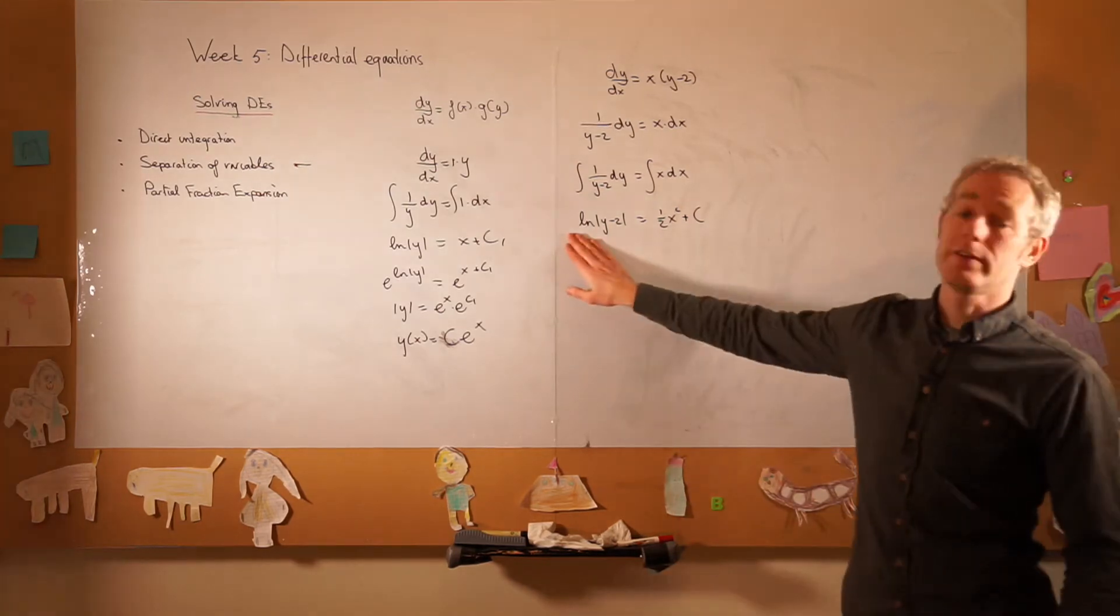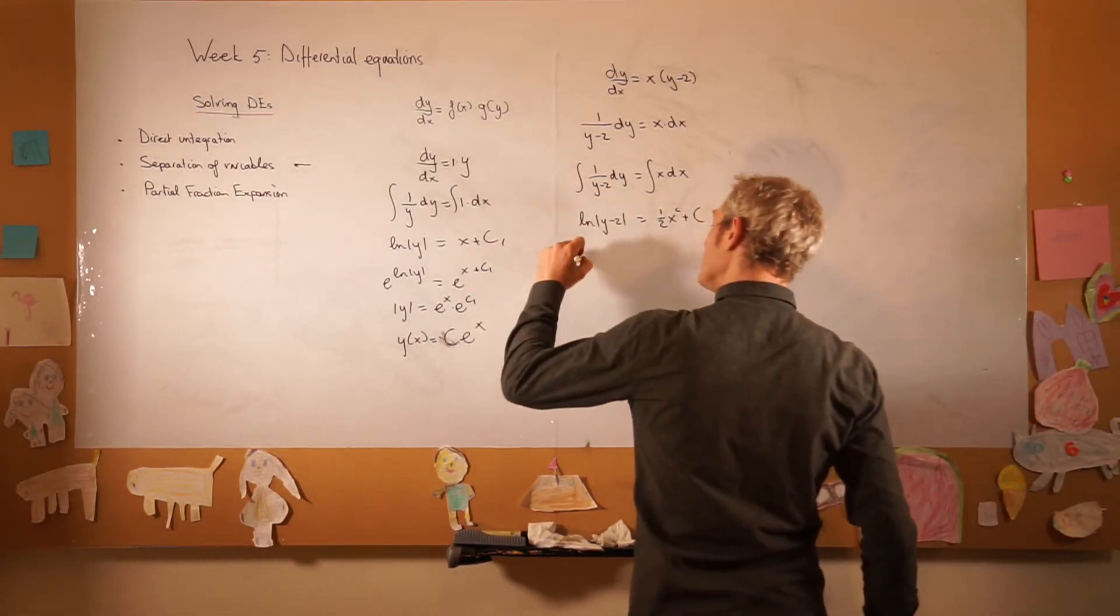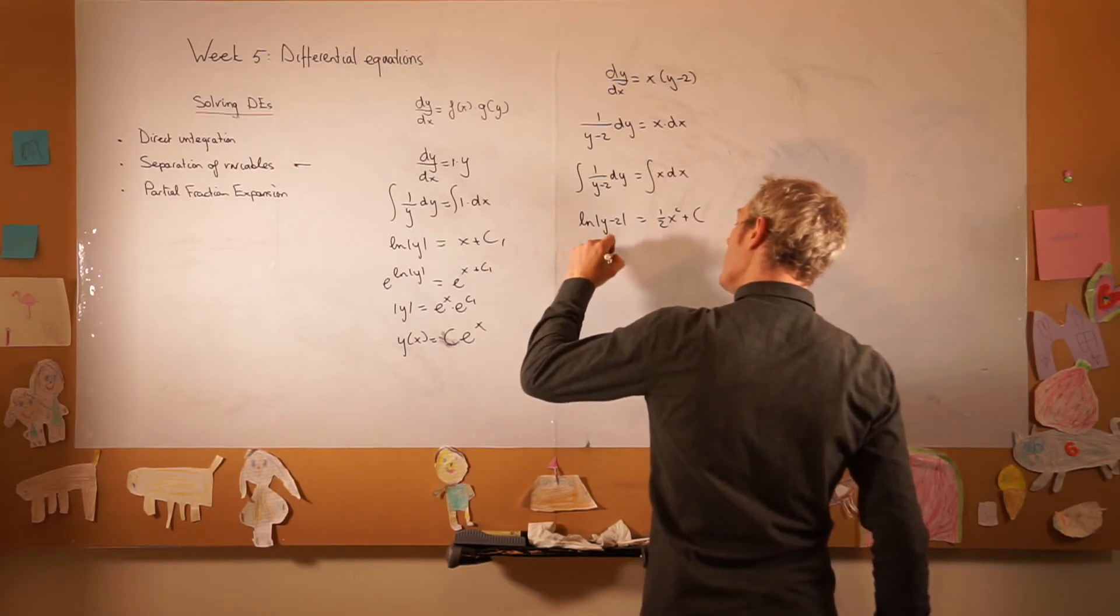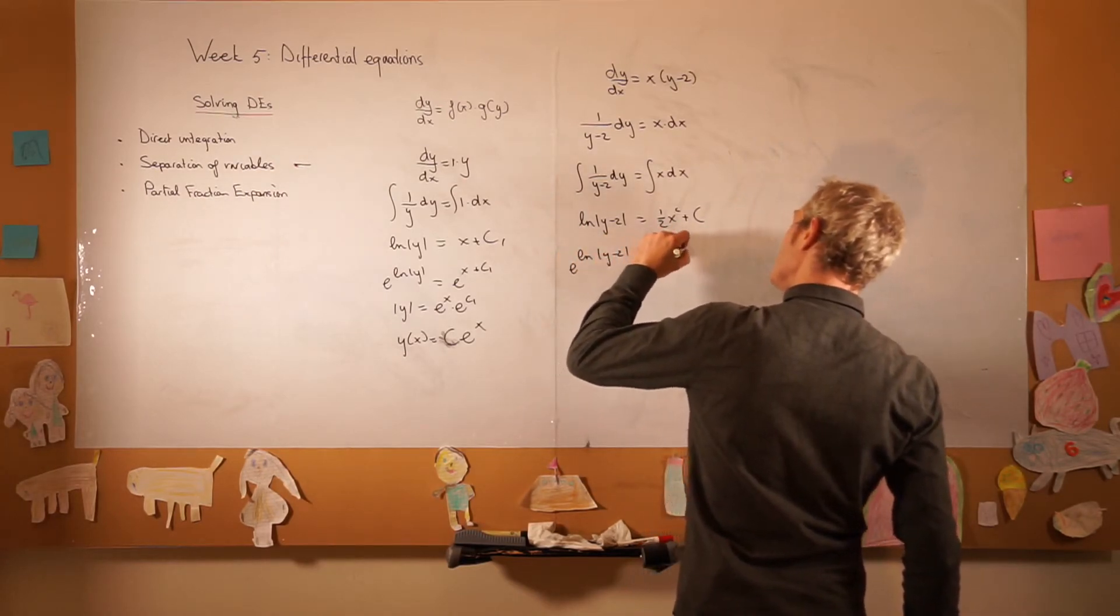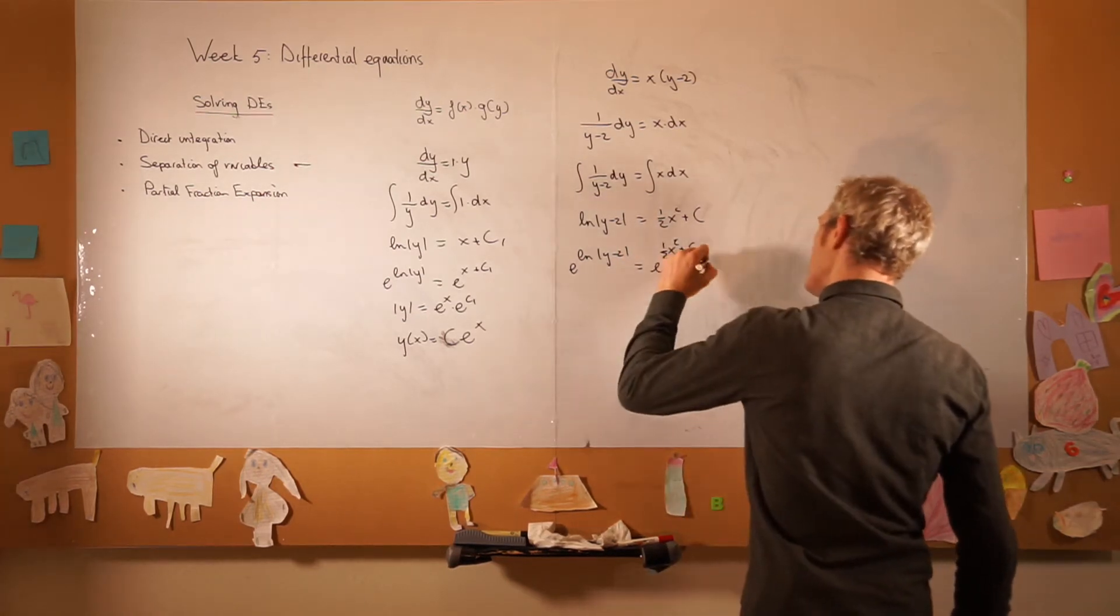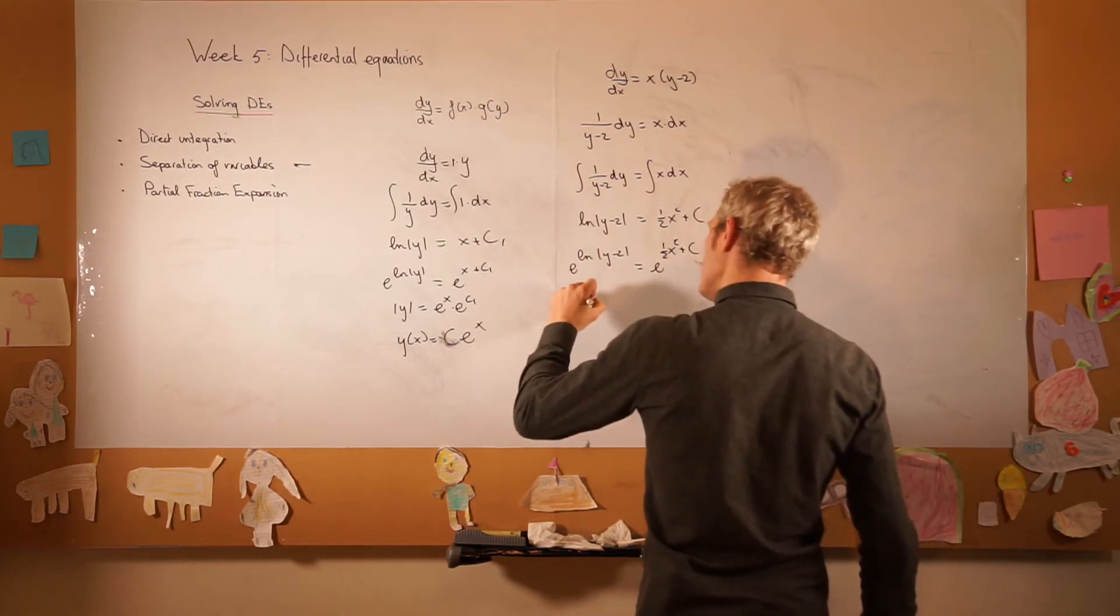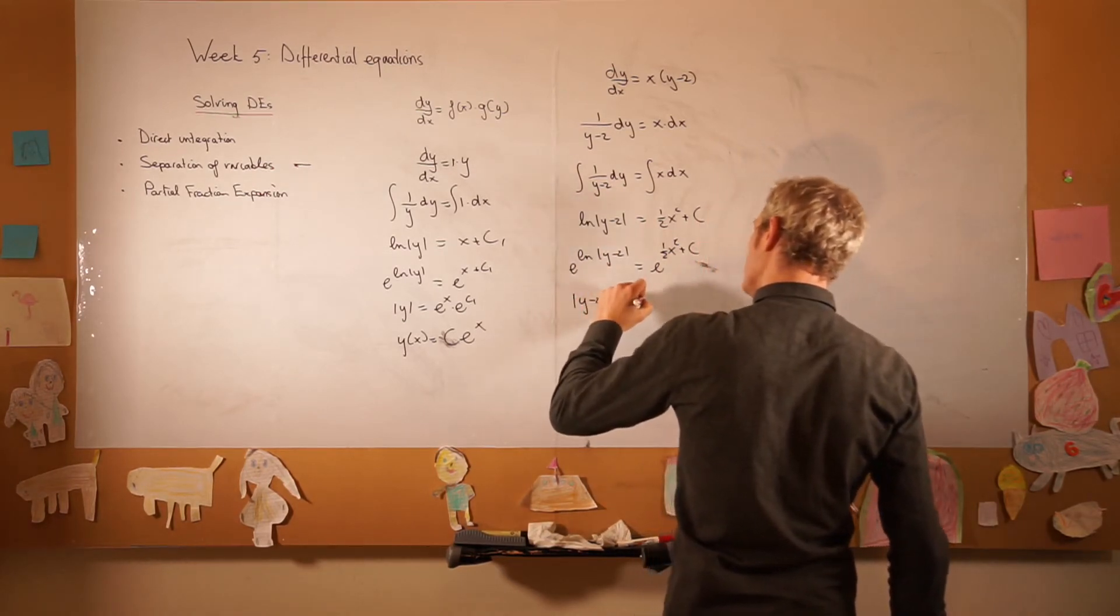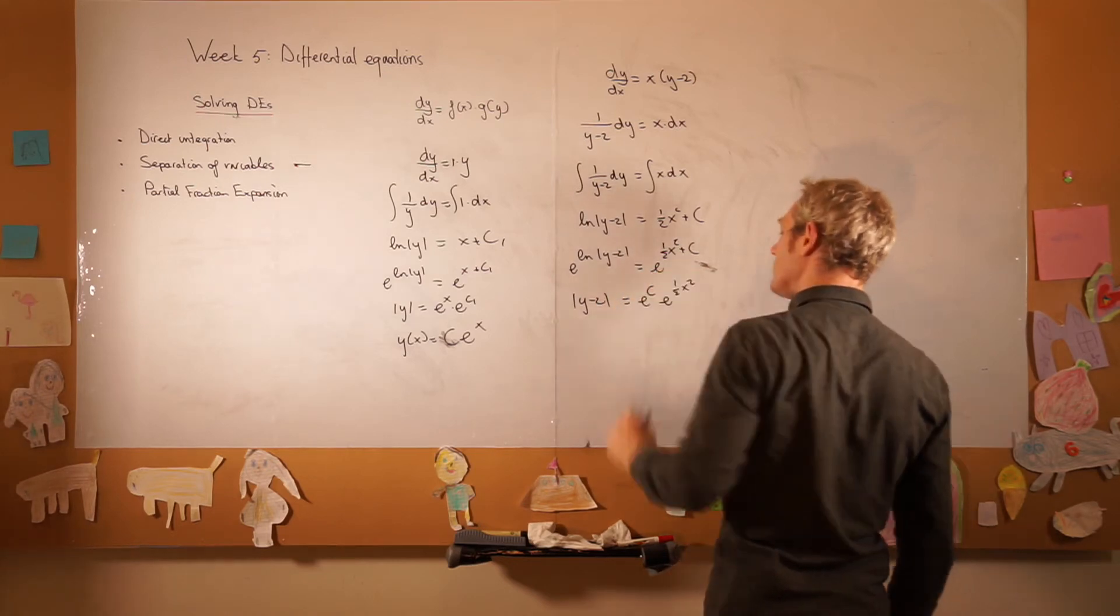To get rid of this natural logarithm, we take the exponential function ln(y minus 2) is equal to e to the power of half x squared plus c, which we can write as, well we rewrite this, y minus 2 absolute is equal to e to the power of c times e to the power of half x squared.